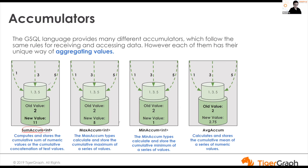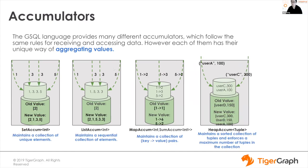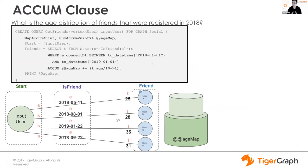For a SumAccum — if the existing value is 2 and it receives new values 1, 3, 5, the new value after aggregation will be 11. MaxAccum keeps the max value, MinAccum keeps the min, AvgAccum keeps the average. For collection-type accumulators: SetAccum stores unique elements, ListAccum stores all elements, MapAccum stores key-value pairs, and HeapAccum accumulates tuples.